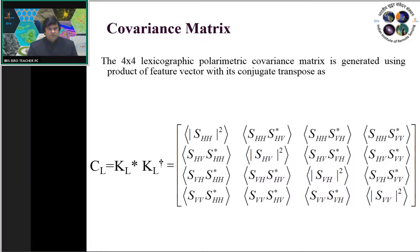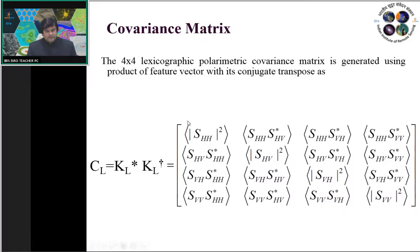Multiplying a 4×1 matrix by its 1×4 transconjugate gives a 4×4 matrix. The diagonal elements of this 4×4 covariance matrix have real values only, while off-diagonal elements are complex numbers. Under the reflection symmetry assumption for monostatic SAR systems, HV equals VH, so the 4×4 matrix reduces to a 3×3 matrix — from 16 values down to 9 values.